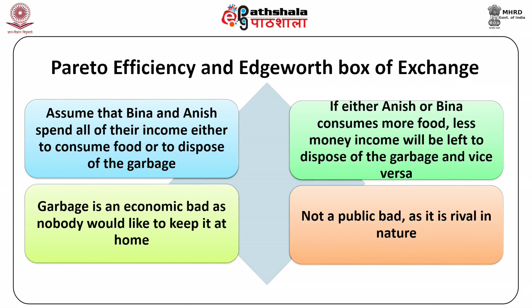We shall discuss Pareto efficiency and the Edgeworth box of exchange. Assume that Bina and Anish spend all of their income either to consume food or to dispose of garbage. If either consumes more food, less income will be left to dispose of garbage and vice versa. Garbage is an economic bad as nobody would like to keep it at home, but it is not a public bad as it is rival in nature.